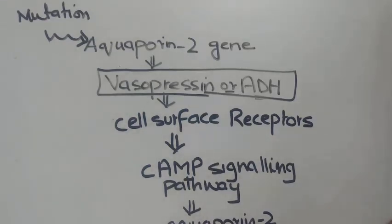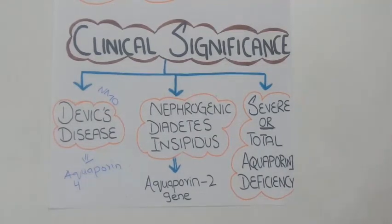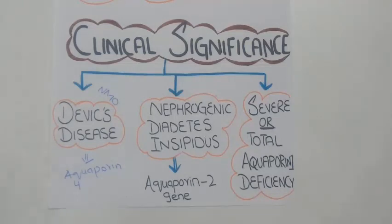Third is severe or total aquaporin-1 deficiency. In this condition, people are generally healthy, but the kidneys cannot concentrate solute in the urine or conserve water. As a result, large amounts of diluted urine containing large amounts of water are excreted, leaving the body dehydrated.